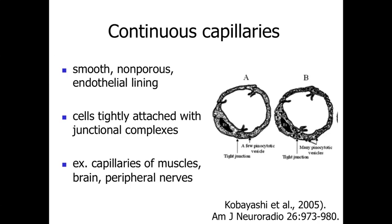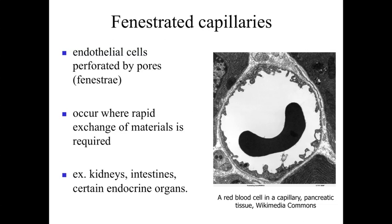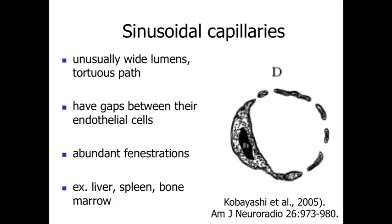Looking at the different types of capillaries: continuous capillaries have a smooth lining where cells are tight to one another, so any movement of materials must pass through the cells themselves. Fenestrated capillaries have very thin pores in the endothelial lining, allowing more rapid exchange of materials — seen in areas like the kidneys and intestines. Sinusoidal capillaries have clefts and gaps between the endothelial cells, and may still have fenestrations, allowing very rapid exchange — seen in the liver, spleen, and bone marrow.